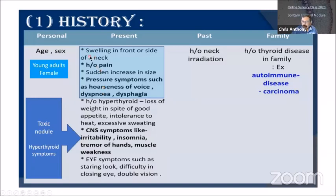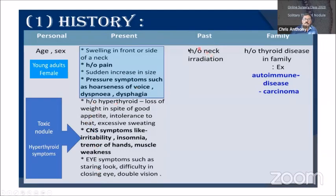Most patients may not have any symptoms; sometimes small nodules are not even noticed until somebody else in the family notices it. If it is a toxic nodule — meaning the nodule is hyperactive and increases production of thyroid hormones — the patient can be toxic with hyperthyroid symptoms. It is very important to get a history of neck irradiation, family history of thyroid disease, autoimmune disease, and family history of cancer, especially cancer of the thyroid.